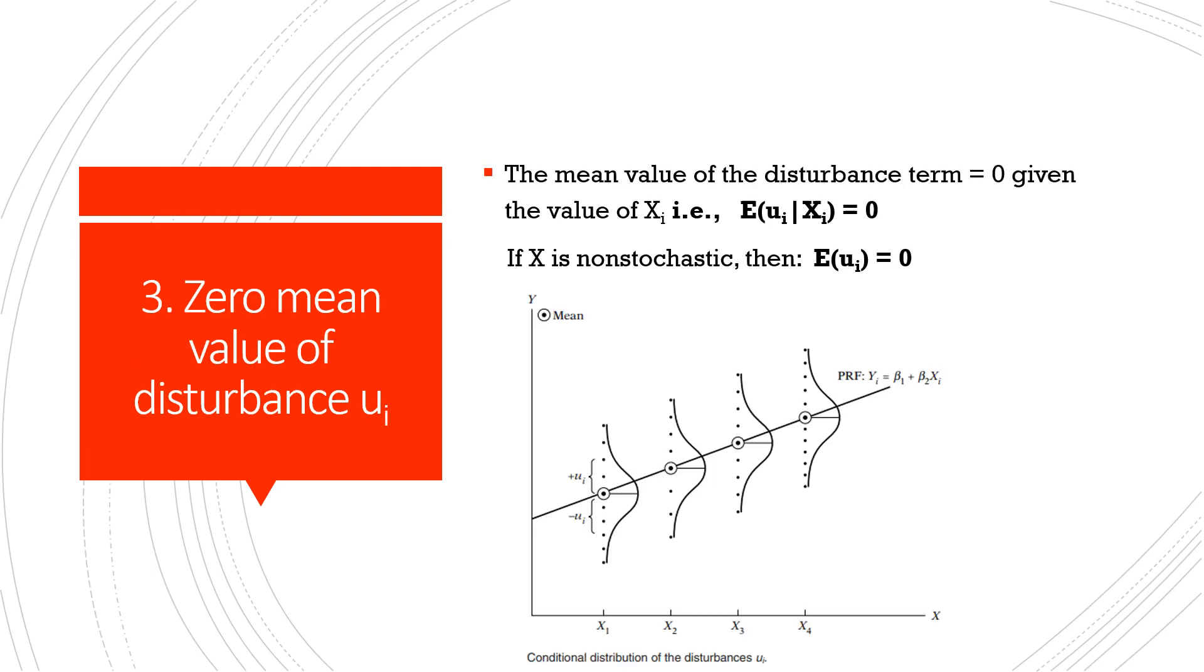The third assumption is zero mean value of disturbance mui. So the mean value of the disturbance term is equal to zero given the value of xi, that is, the expectation of mui given xi is equal to zero. Or if x is non-stochastic, then we write it as the expectation of mui is equal to zero, that is, the mean of the random disturbance term is zero.